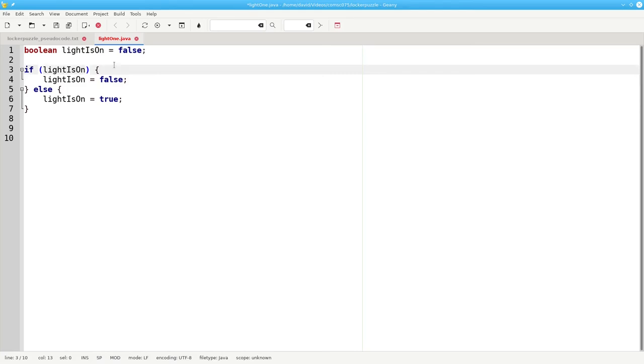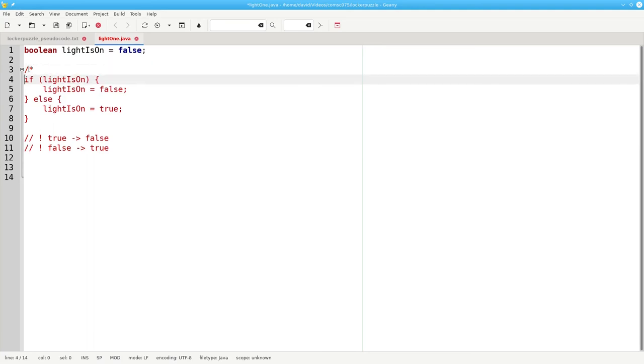But there's even a better solution, the NOT operator. Consider this. What is NOT true? That's false. What is NOT false? That's true. That means I can replace this entire if statement with a single statement saying lightIsOn becomes NOT lightIsOn. When lightIsOn is true, not true is false, which will be assigned to lightIsOn. When lightIsOn is false, NOT lightIsOn will become true, and that will become the new value.